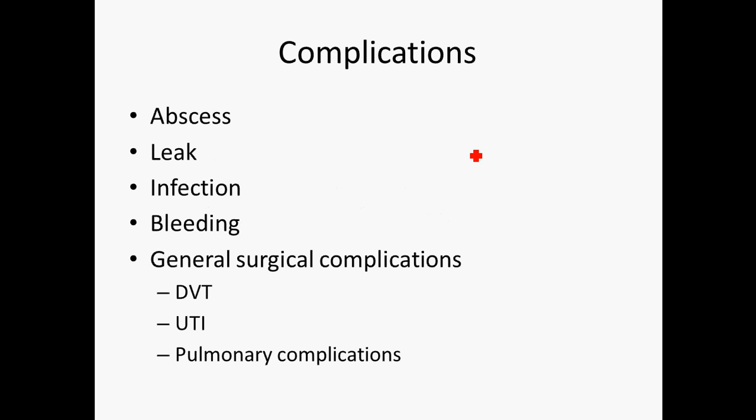Post-operative complications include abscess, anastomotic leak, infection, and bleeding, as well as the usual surgical complications like DVT, UTI from the catheter, and pulmonary complications from anesthesia. These complications actually do occur with meaningful frequency — infection, bleeding, and bowel leakage can happen on pretty much any bowel re-anastomosis, so careful monitoring is essential.